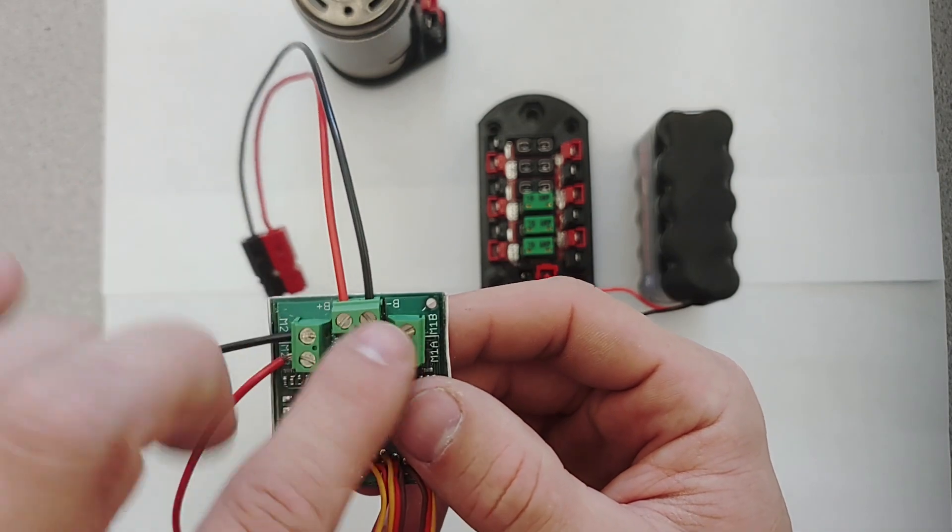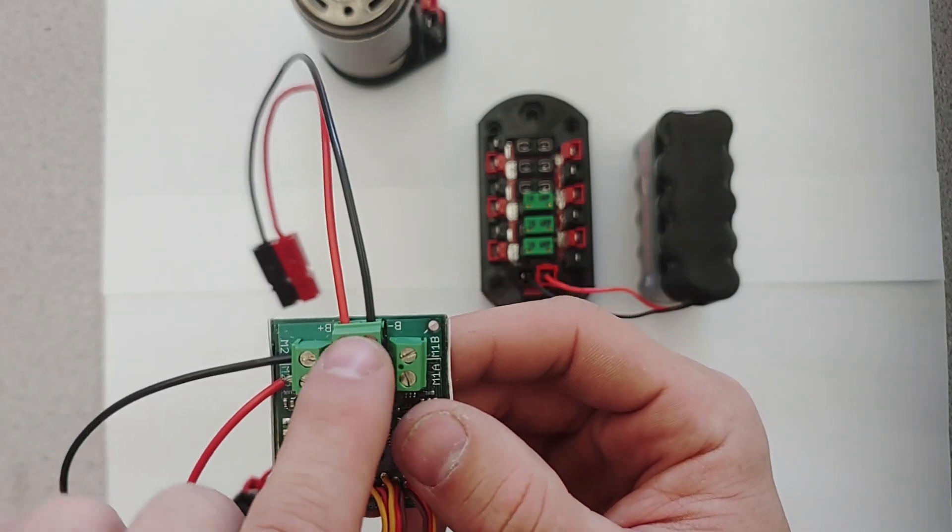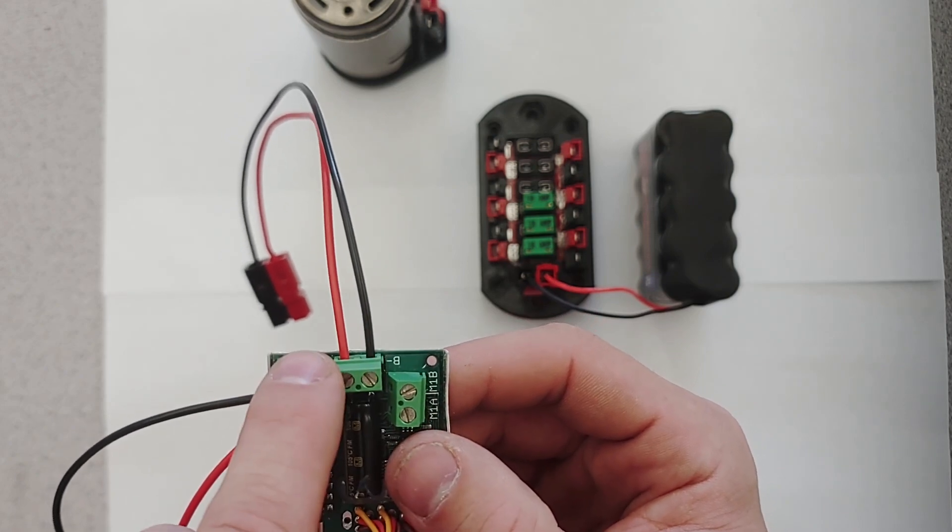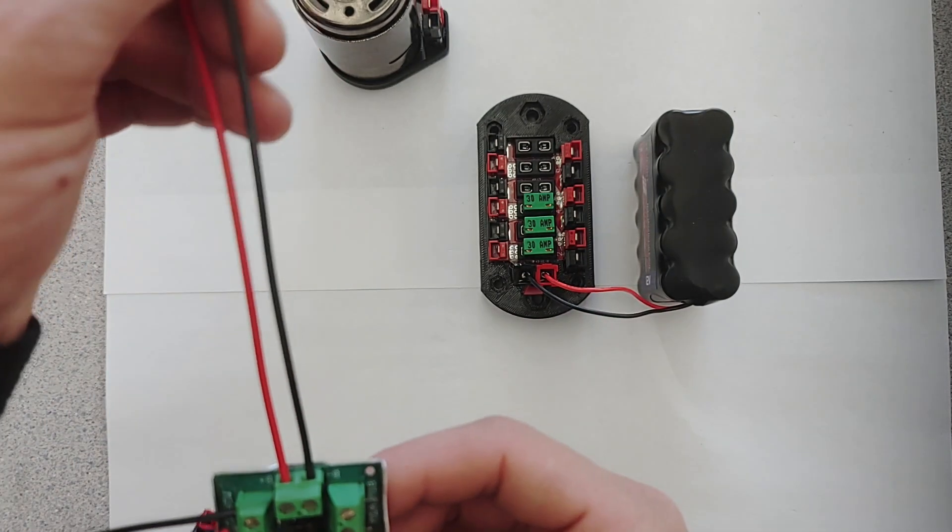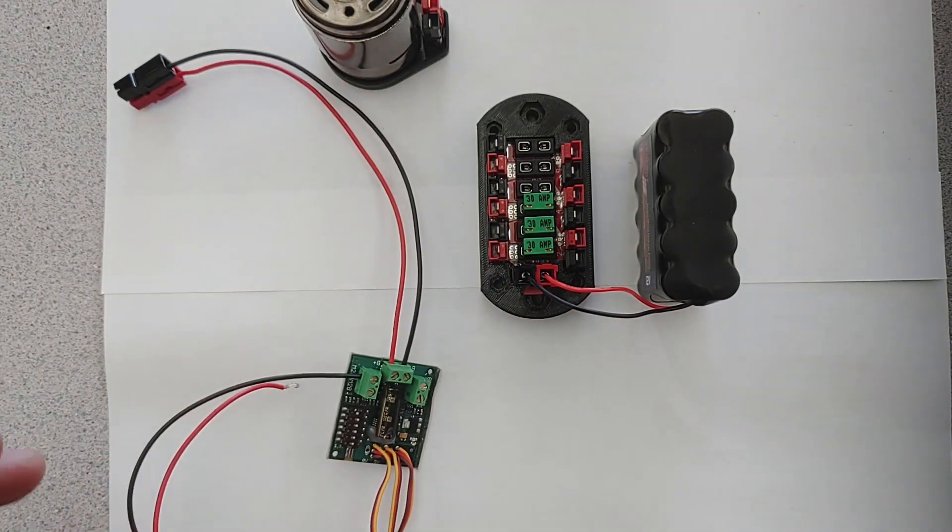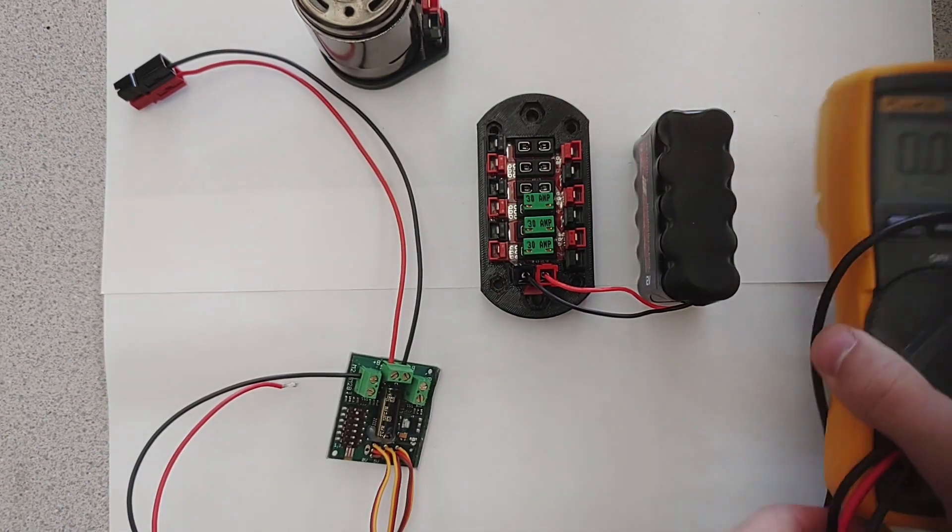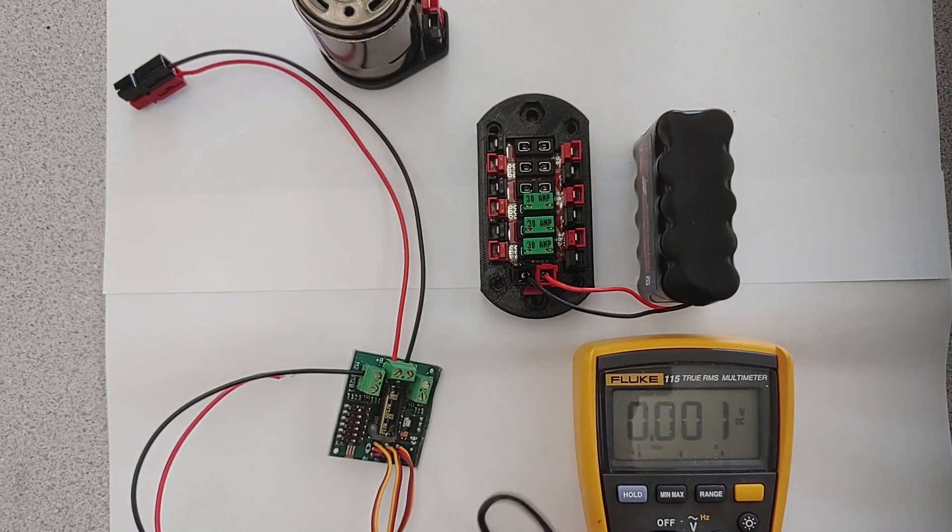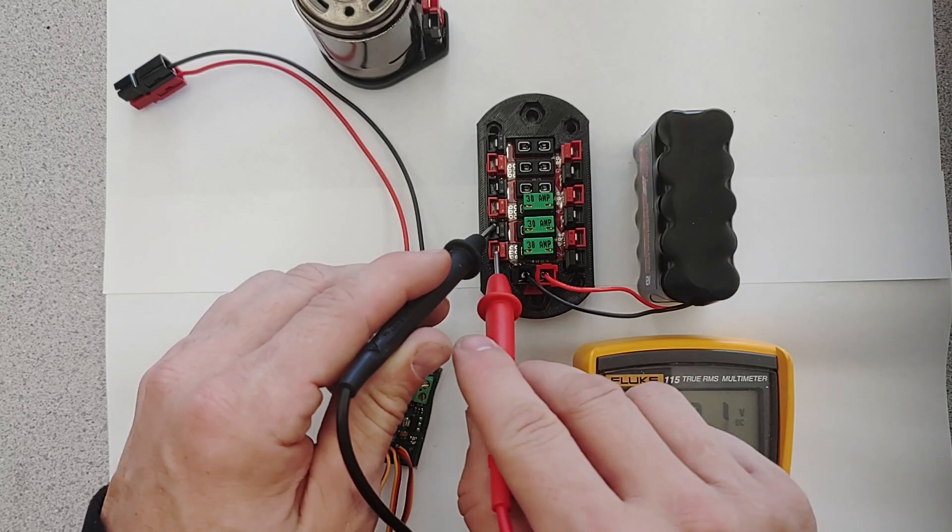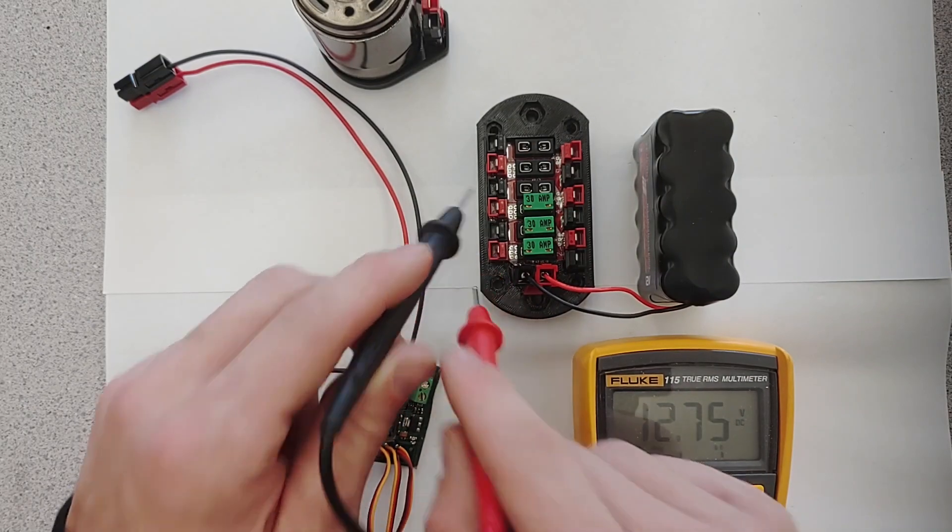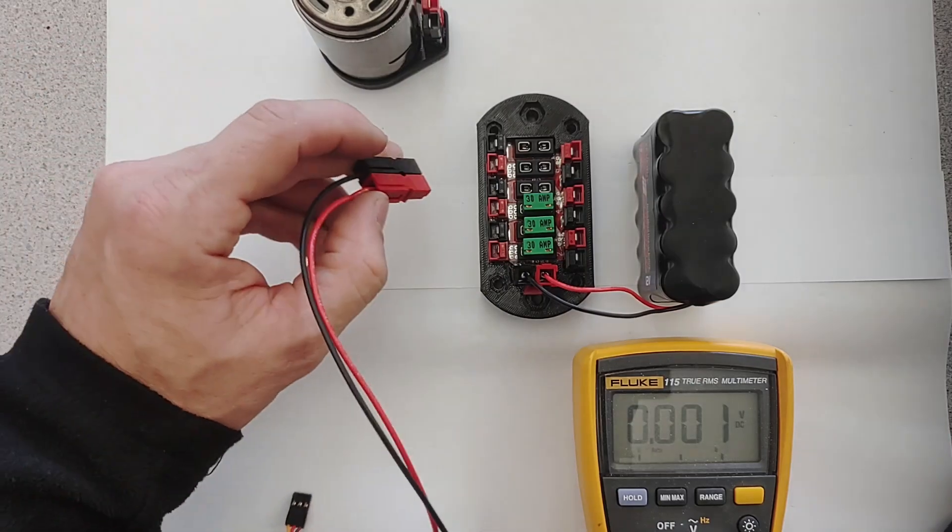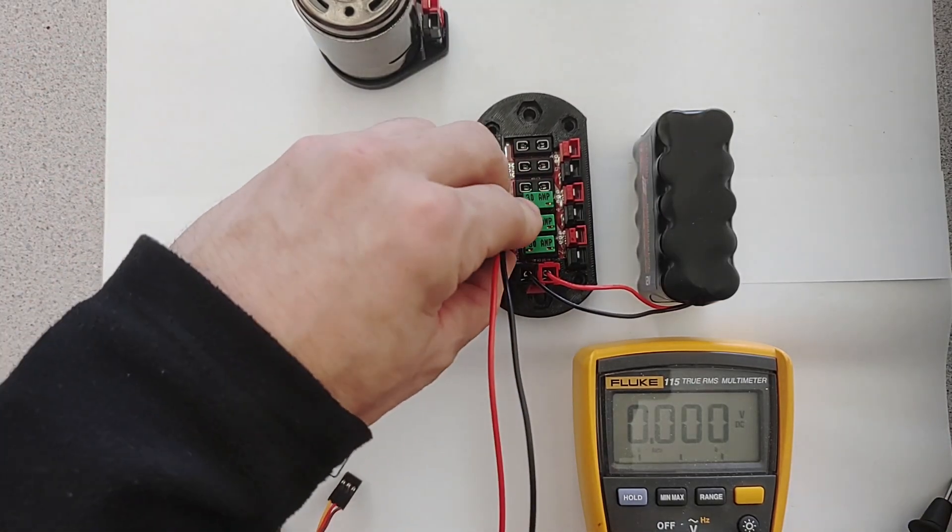When we're looking at this electronic speed controller, we want to look at our different connectors. We have negative and positive, black is always negative, red is always positive. We're going to take this and we're going to take this to a circuit that has power. So we're going to check that just to make sure that we're taking it to a circuit that has power. So this first piece, we have a breaker in and we have power, so we're going to connect that and push this into here.